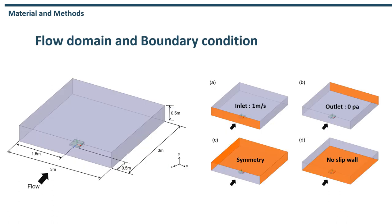This is the flow domain and boundary condition. To accurately analyze the wake region generated behind the structure, the flow domain was set to a sufficient size. Inlet and outlet boundaries were specified by a flow velocity of 1 m/s and pressure of 0 Pa. The bottom boundary was specified by no-slip wall conditions, and the others were specified by symmetry conditions.